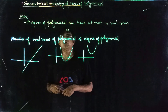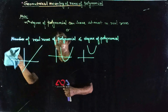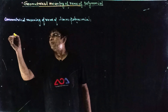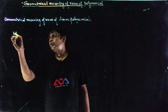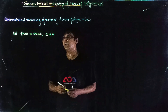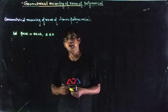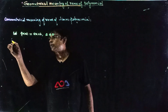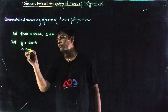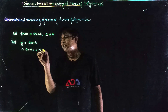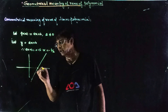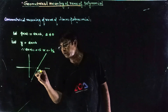Now we discuss the geometrical meaning of zeros of a linear polynomial. Let p(x) be a linear polynomial, meaning ax + b, where a is not equal to zero. This will always draw a straight line. Whenever you draw a straight line, it will always cut the x-axis at a unique point. Let p(x) = y, then ax + b = 0 to find a zero, then x = -b/a. When you draw its graph, it will always cut the line at a unique point, so one real zero exists, which is -b/a.